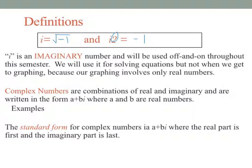Complex numbers are defined to be when you take real parts and imaginary parts and combine them together — so like 2 plus 3i. That is one complex number: it has its real part 2 and its imaginary part 3i. You always want to leave your answers in this form with the real part first, then the imaginary part and the i at the end.